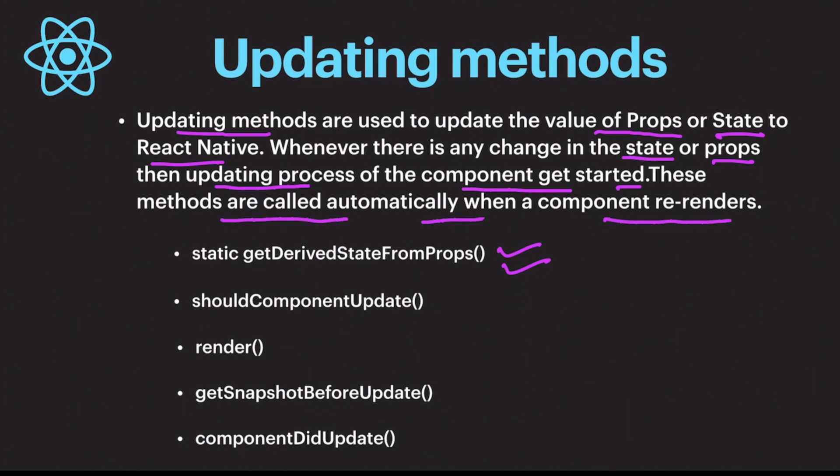The second method in the updating method list is `shouldComponentUpdate`. We use this method whenever we want to stop re-rendering. We can stop the re-rendering based on props or state by adding a condition to decide whether the component should update or not. The third method, `render`, we have also discussed and used in the mounting methods, and it is called every time we update anything in the component.